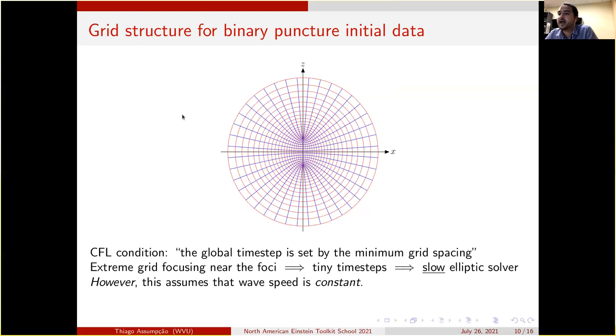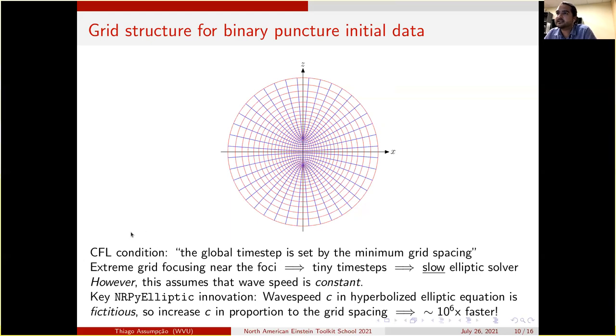However, this assumes that the wave speed is constant. This is a key NRPyElliptic innovation: the wave speed c in the hyperbolized elliptic equation is fictitious, so we can increase c in proportion to the grid spacing. In fact, near the outer boundaries, the wave speed is a million times faster in some cases than the wave speed near the punctures, which makes the relaxation much faster.